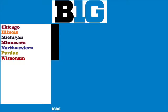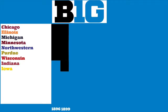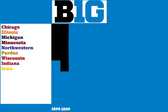In 1896, Chicago, Illinois, Minnesota, Wisconsin, Northwestern, Purdue, and Michigan formed the Intercollegiate Conference of Faculty Representatives, known then as the Western Conference. In 1899, Indiana and Iowa joined the Western Conference, first referred to as the Big Nine. In 1907, Michigan was voted out of the Big Nine for not adhering to league rules, and it was then referred to as the Big Eight.